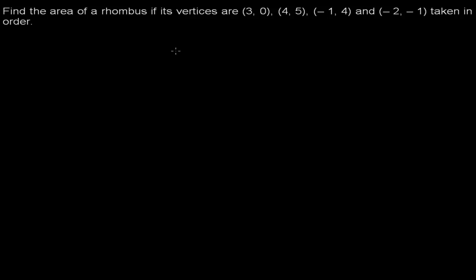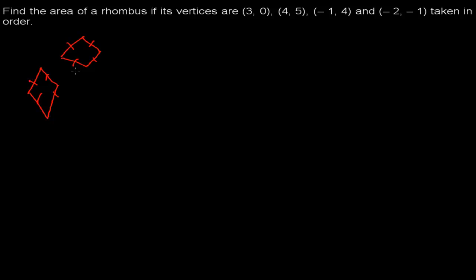First, let's understand what a rhombus is. A rhombus is such a structure whose all sides are equal. All sides being equal does not necessarily mean it is a square, because in a square each and every angle is 90 degrees. But in a rhombus, it may not be — the sides are all equal, that's it.